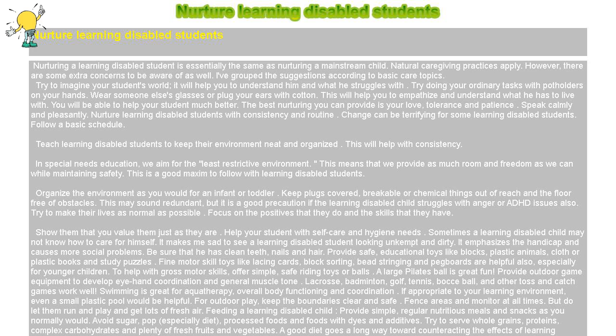Provide outdoor game equipment to develop eye-hand coordination and general muscle tone. Lacrosse, badminton, golf, tennis, bocce ball, and other toss-and-catch games work well. Swimming is great for aqua therapy, overall body functioning, and coordination — even a small plastic pool would be helpful if appropriate to your learning environment. For outdoor play, keep boundaries clear and safe, fence areas, and monitor at all times, but do let them run and play and get lots of fresh air.